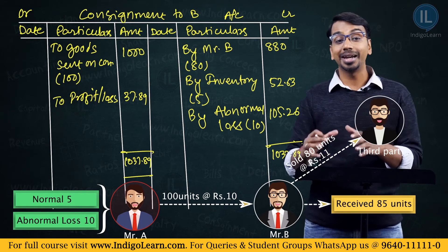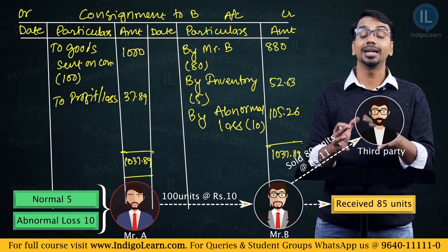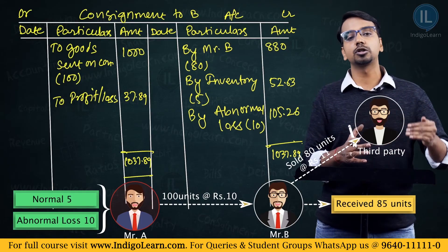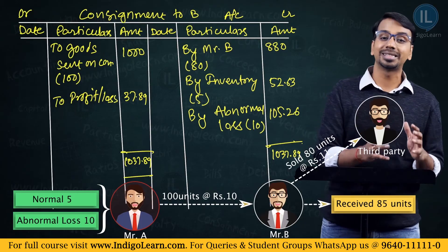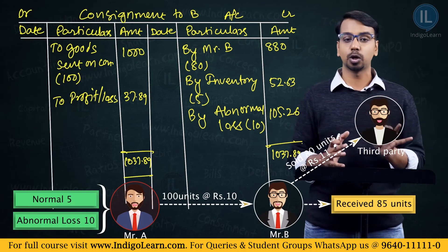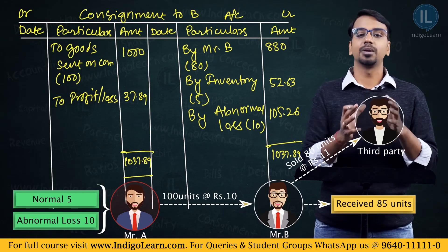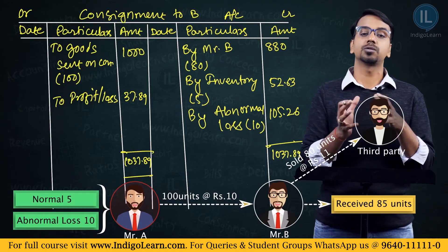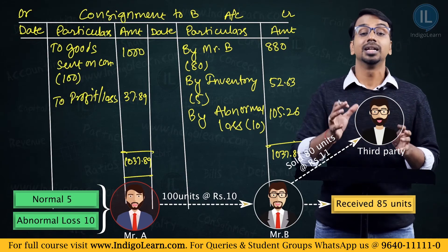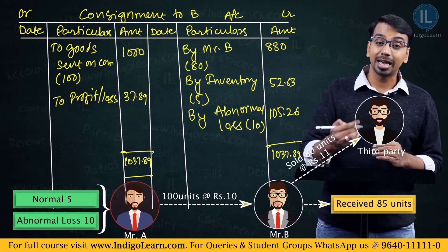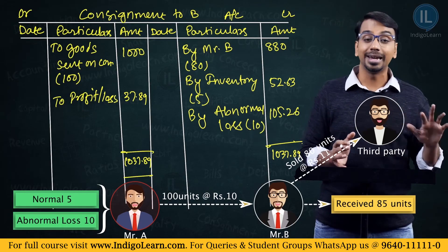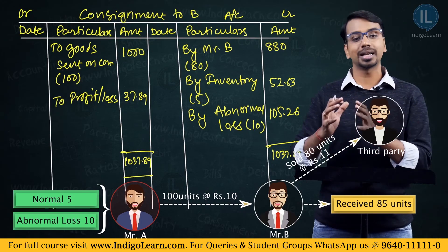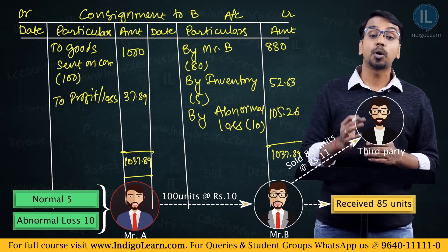If you had not considered the credit of abnormal loss, you would not have a clear picture — you would have felt that the consignment is loss-making, whereas it is not. There was some abnormal loss in transit which we show separately in the P&L account without impacting the consignment account. To repeat: normal loss is included as a part of cost of inventory, loaded on the total cost spread over expected units received. Abnormal loss is credited to the consignment account and separately debited to the profit and loss account.